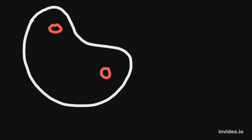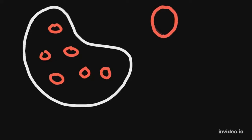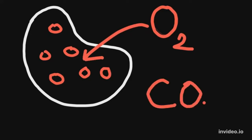The most common type of blood cell that our blood carries is RBC. It is required for the delivery of oxygen from the lungs to the cells, and the delivery of carbon dioxide from the cells back to the lungs. In this way, it not only fulfills the oxygen demand of the cells but also maintains the pH of the blood.